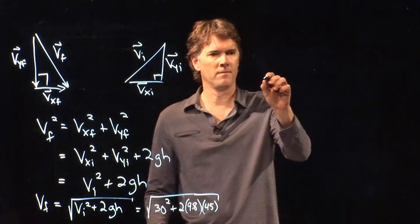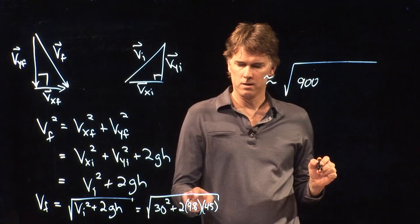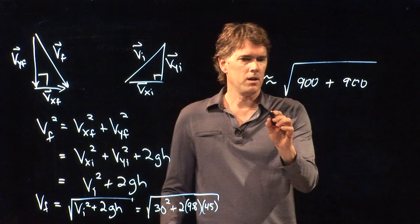Let's see if we can approximate that while you guys punch it into your calculator. So we've got square root of 30 squared is 900. 2 times 9.8, that's basically 20, times 45 is roughly another 900.